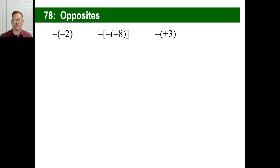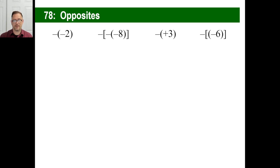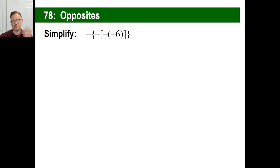How about that one? That's kind of tricky — there's something new in there, a little positive sign. We don't care about that. What's the opposite of positive three? Negative three. There's an odd number. How about this one? Negative six — and the opposite of negative six is positive six. There's an even number, so it's positive.